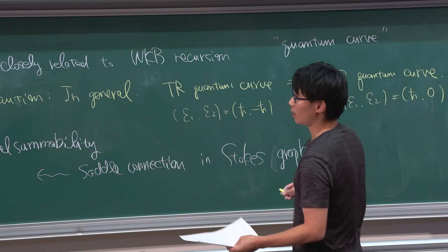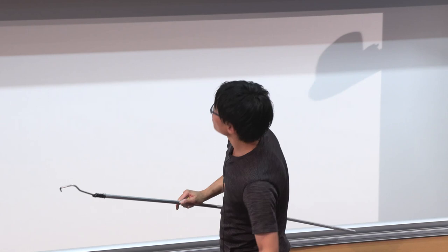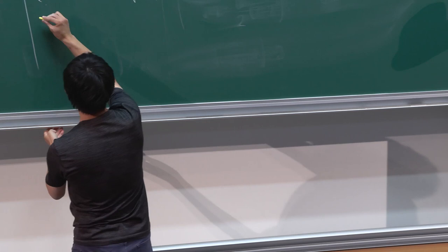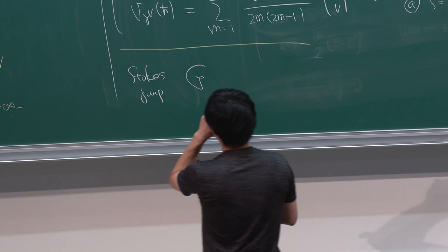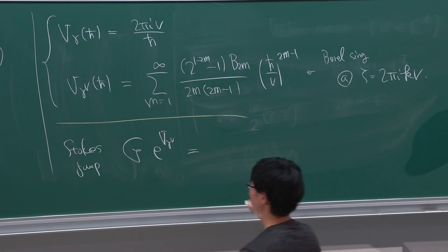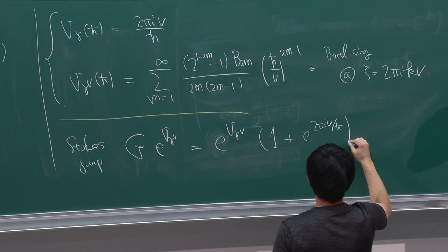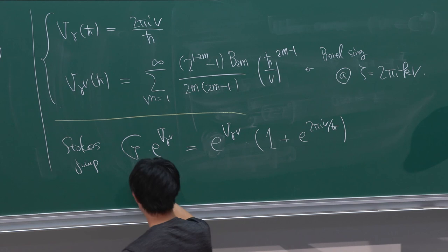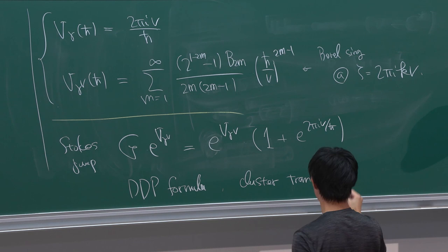Not only that, the Stokes jump in this case can also be written down. The Stokes jump is obtained by a formula. This is the so-called Delabaere-Dillinger-Pham formula, or DDP formula, also known as cluster transformation. This is a well-known relation between WKB and cluster algebra.